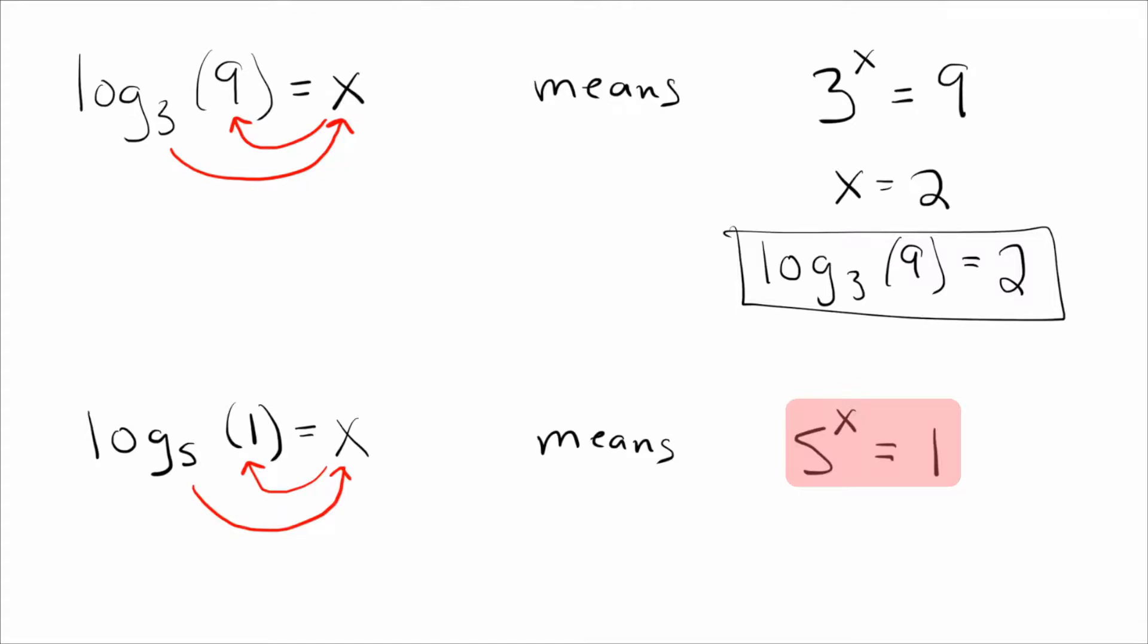And you know the answer if you see my video, Why Does x to the 0 power Equal 1? But it is, in fact, if you take to the 0 power, that equals 1. So log base 5 of 1 equals 0.